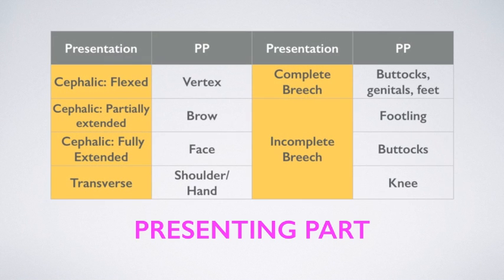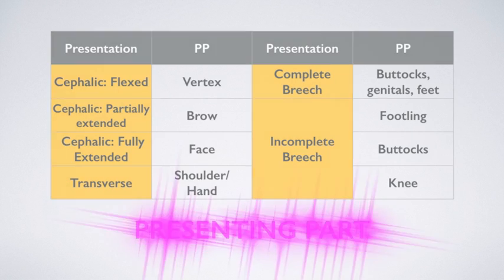This table shows the presenting part in various other presentations. In shoulder presentation, the presenting part can be the shoulder or hand in case of a hand prolapse. In complete breech, the buttocks, genital organs, or feet are the presenting parts. One or both feet, buttocks, or one or both knees are the presenting parts in incomplete breech presentation.